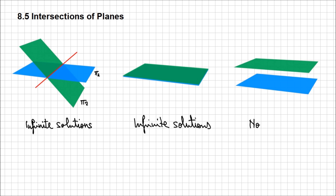The last situation in which you can find two planes in regards to each other, very similar to the previous one, is if you have two planes that are parallel. Their normals are parallel as well, but they don't have any point in common. So basically, there is no solution to the system of equations formed by the equations of those two planes. These are the three types of relations that you can find two planes in regards to each other.